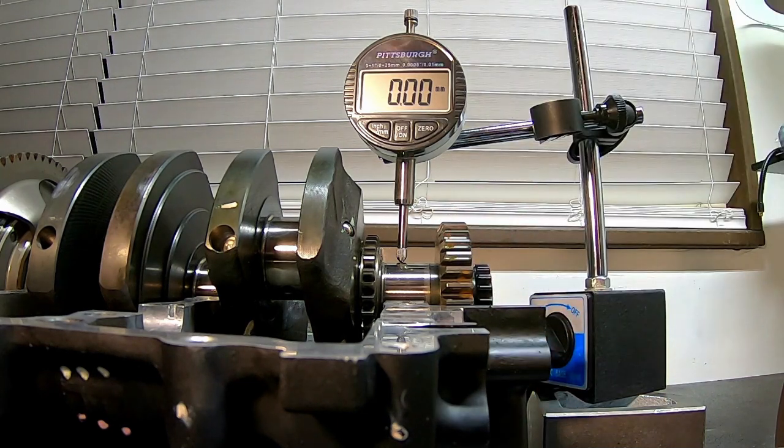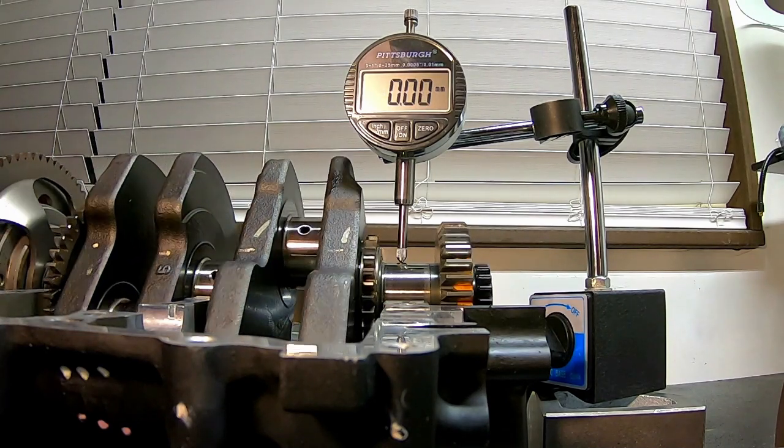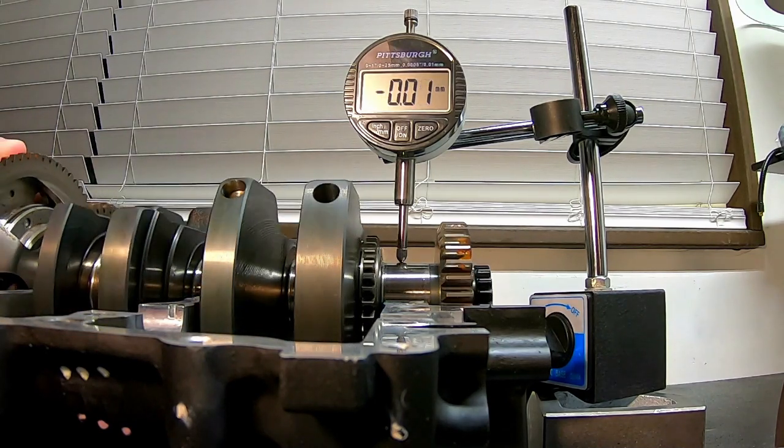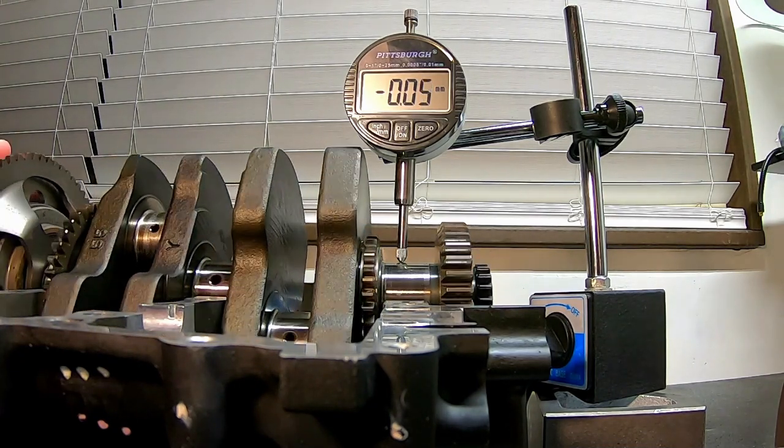So here is the original crankshaft, and as you can see, the numbers start bouncing around. They eventually end up at 0.06 millimeters, so this one is no longer serviceable. It is a giant paperweight.